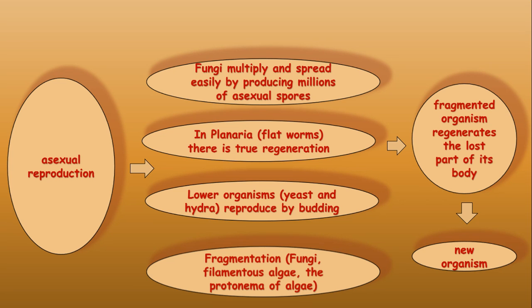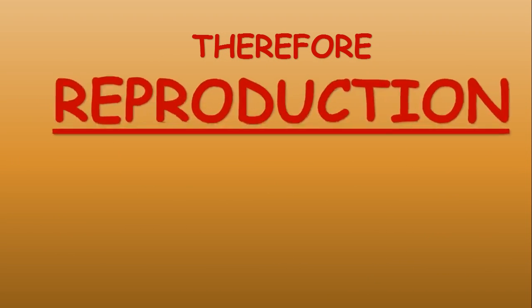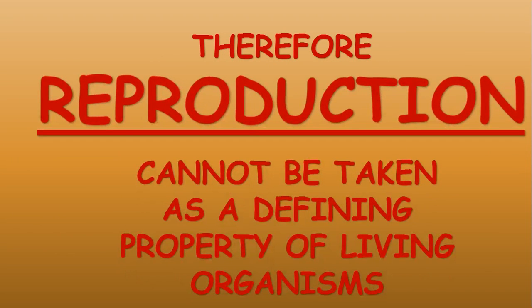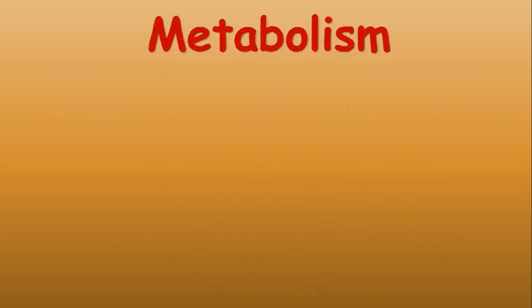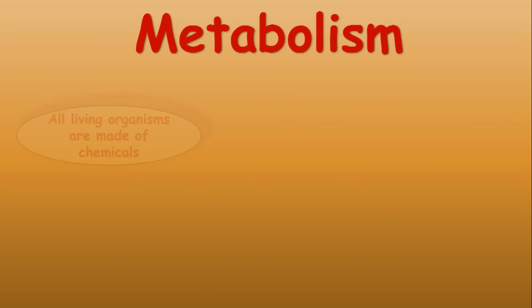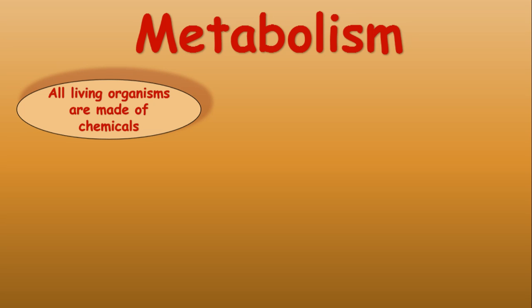Fragmentation is also a mode of asexual reproduction in fungi, filamentous algae, and the protonema of mosses. Therefore, reproduction cannot be considered as a defining property of living organisms because certain living organisms like mules, sterile worker bees, and infertile humans do not undergo reproduction.